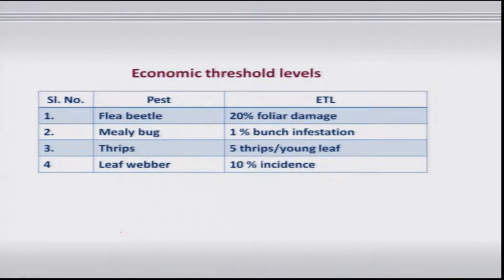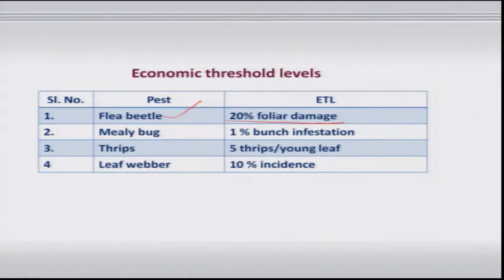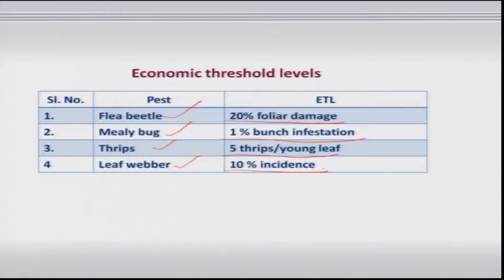The economic threshold levels (ETL) of some important pests must be understood before taking up any control measure. For flea beetle it is 20 percent foliar damage; for mealybug it is 1 percent bunch infestation; for thrips it is 5 thrips per young leaf; and for leaf folder it is 10 percent incidence.